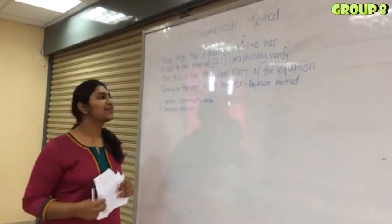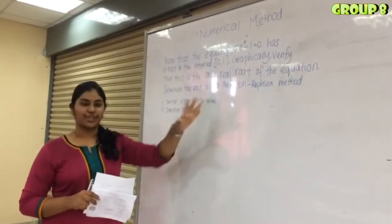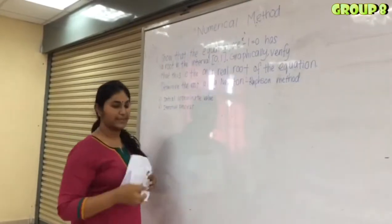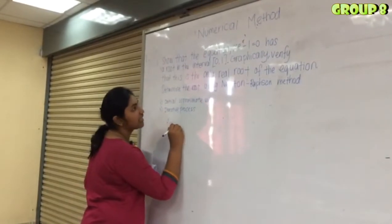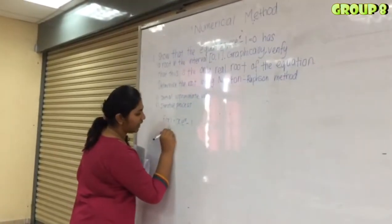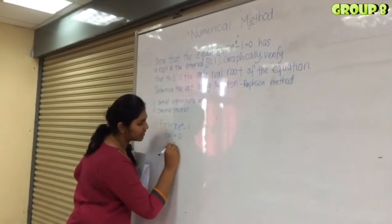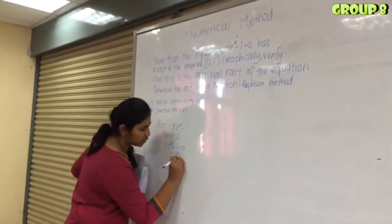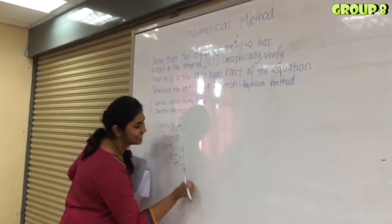I'm going to solve the question now. This is a question that cannot be solved directly, so we are using the Newton-Raphson method. We have to find the real root, which is between 0 and 1. So first, f(x) equals x·e^x minus 1. Setting f(x) = 0 gives x·e^x minus 1 = 0, so e^x equals 1 over x.